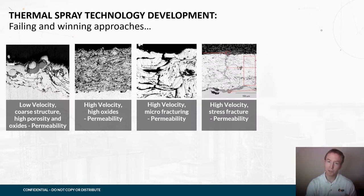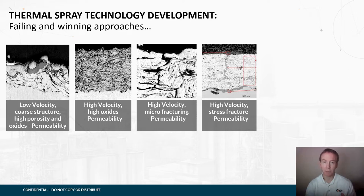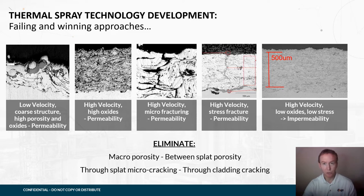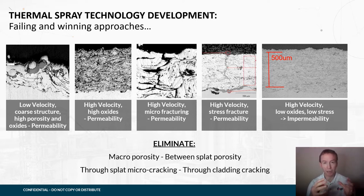Why do we choose high velocity thermal spray? Because we know that other types of technology do not perform in these environments — they create a permeable barrier which is then compromised, causing corrosion underneath and failure. Low velocity systems, high velocity systems with high oxide content, and fractured or micro-crack systems don't work. IGS has used all these systems historically and used our understanding and experience to develop a high velocity thermal spray system that produces very dense microstructures. We mitigate oxides through alloy modification and reduce internal stress to prevent cracking — these are the systems which perform in the field and have shown the long-term corrosion protection we need.